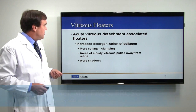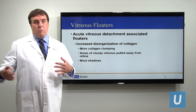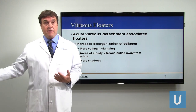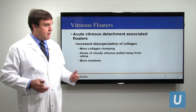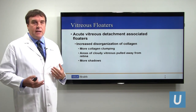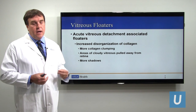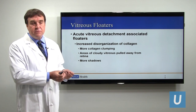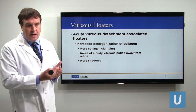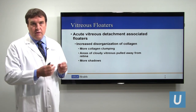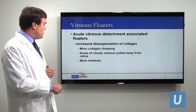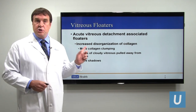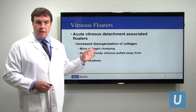Acute vitreous detachment-associated floaters usually come on suddenly — where one had a few degenerative floaters before, now all of a sudden there's a whole bunch of new floaters that weren't there five or ten minutes ago. These are often from increased clumping of the collagen fibers happening fairly rapidly, and also from areas of the vitreous that were attached to the back of the eye and are therefore more opaque. When those areas detach from the retina, they end up casting shadows, producing more floaters.